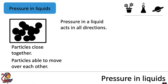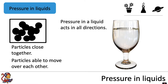Pressure in a liquid acts in all directions. So if we looked at this glass of water here, we wouldn't be saying pressure is just acting downwards. Because these particles are able to move and flow over each other, pressure acts in all directions within that liquid, as the particles flowing around will be colliding with each other and all of the sides of the container that they are in.